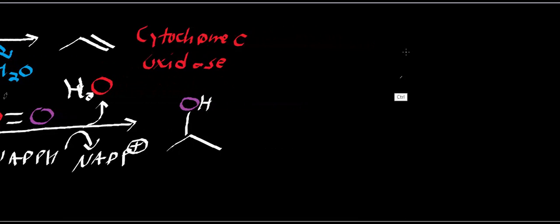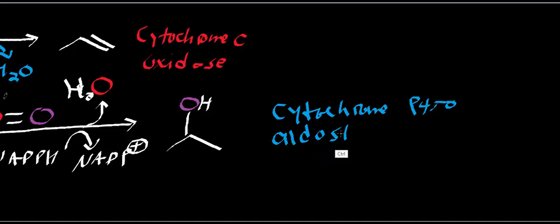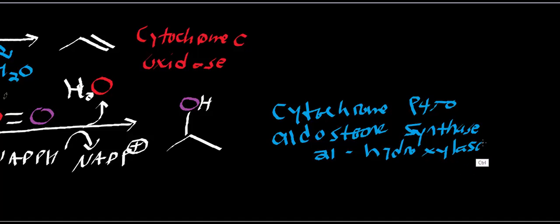So that's the definition of a monooxygenase, and there are certainly a lot of monooxygenases, and a lot of them are cytochrome P450 monooxygenases. So some of these are cytochrome P450 enzymes, and in fact, one of them that's of prime importance in physiology is aldosterone synthase. Aldosterone synthase is also one. There's also 21 hydroxylase, and there's even others like 11 hydroxylase, but they're all cytochrome P450 enzymes.